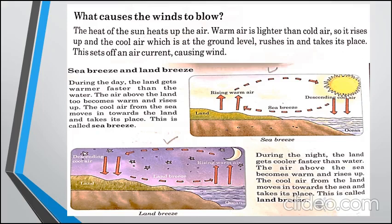دن کے وقت زمین جو ہے وہ زیادہ تیزی سے گرم ہوتی ہے as compared to water۔ Land کے اوپر موجود air بہت زیادہ گرم ہو کر تیزی سے اوپر کی طرف اٹھ رہی ہوتی ہے، تو sea پر موجود cool air اس کی طرف بڑھتی ہے اور hot air کی جگہ لیتی ہے۔ اس کو ہم sea breeze کہتے ہیں۔ جبکہ رات کے وقت land تیزی سے ٹھنڈا ہوتی ہے as compared to water۔